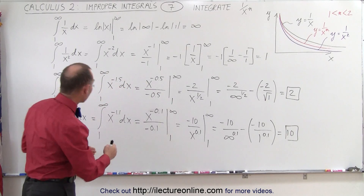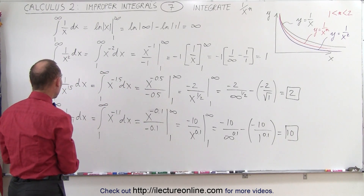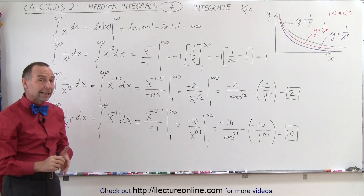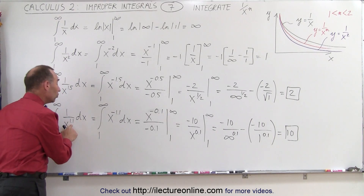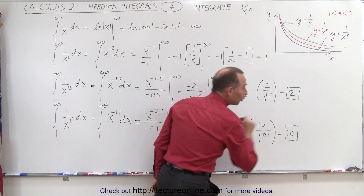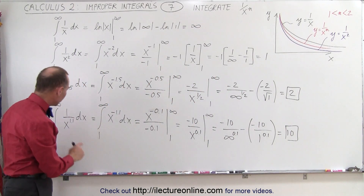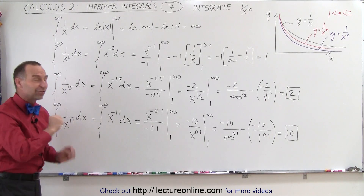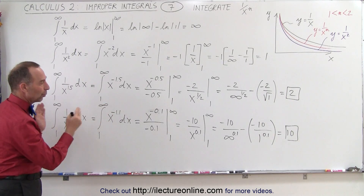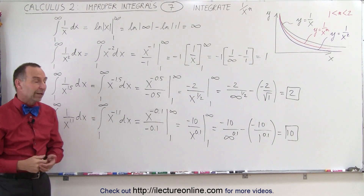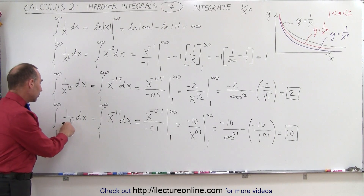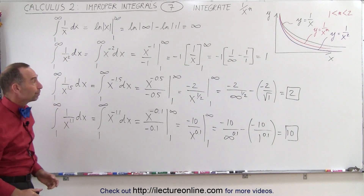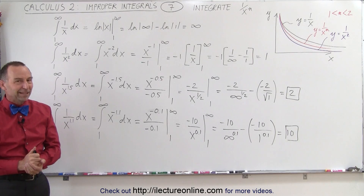So the integral — the area underneath the curve 1 over x to the 1.1 — does become larger and larger as the exponent gets closer and closer to 1. Only in the limit as the exponent reaches 1 will the total integral go to infinity. But anything larger than 1, even x to the 1.0000001, will still converge. Only when the exponent equals exactly 1 does it no longer converge, which is the case of 1 over x.